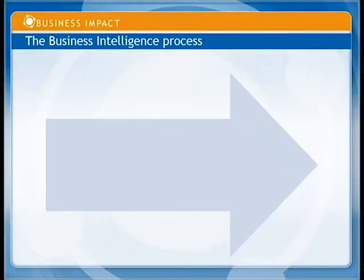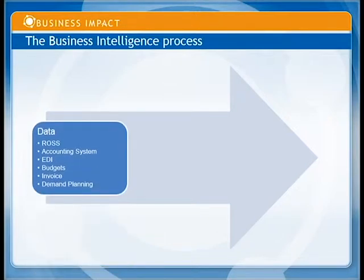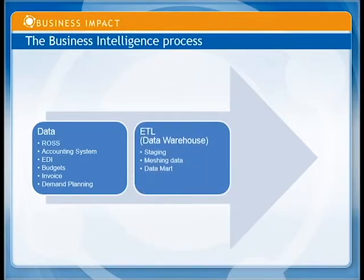In business intelligence, there are three steps. The first is making the data — Ross generates it, but you may also have external data from EDI feeds, invoices, sell-through data, budgets, demand planning, or other separate systems. The second step is staging the data — organizing it in a way that makes it easier for reporting as opposed to just collecting it. This is where Warescape comes in and where ETL is done.